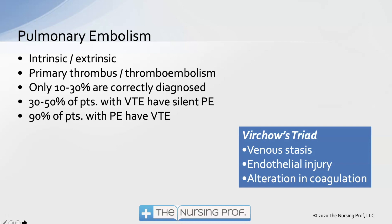Since 90 percent of PE patients have a VTE, we can look for venous thromboemboli as a good indication of PE. We also look at Virchow's triad of risk factors. Dr. Virchow identified three risk factors: venous stasis, endothelial injury, and alterations in coagulation. The combination of these three greatly increases the risk that a patient will develop a venous thromboembolism and/or a pulmonary embolism.